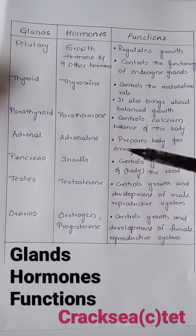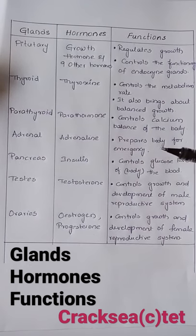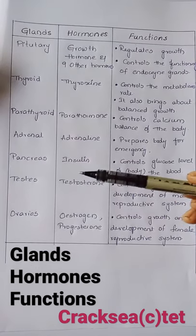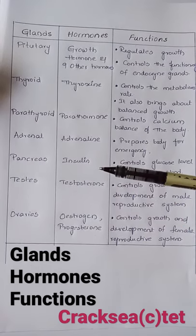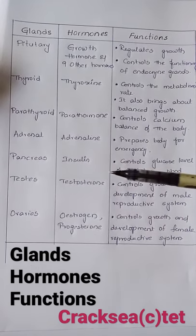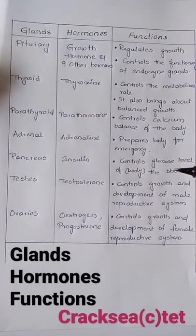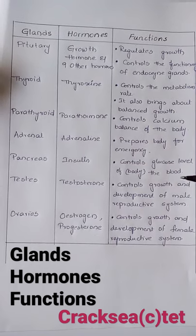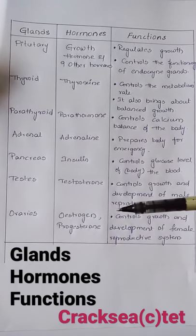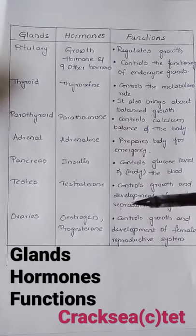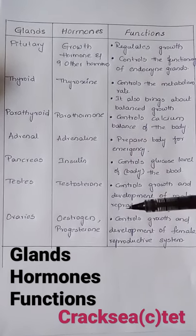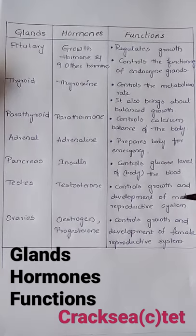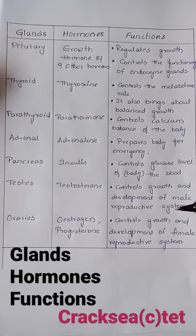adrenaline hormone and prepares the body for emergency. Next one: pancreas gland. It secretes insulin hormone and controls the glucose level of the blood. Next one: testis. It secretes testosterone hormone and controls the growth and development of